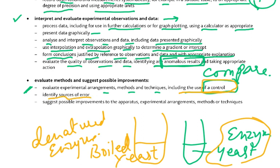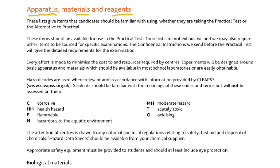Identify sources of error. Suggest possible improvements to the apparatus, experimental arrangements, methods or techniques. These lists give items that the candidate should be familiar with using, whether taking the practical test or the alternative to practical. These items should be available for use in the practical test. These lists are not exhaustive and other items may also be required for specific examinations.